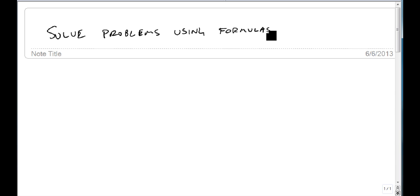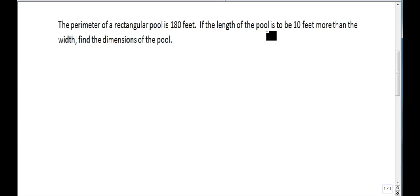So the first example we're going to look at relates to a swimming pool. Suppose we have a perimeter of a swimming pool. We know that the swimming pool has a perimeter of 180 feet. We also know that the length of the pool is 10 feet more than the width. Can we use this information to figure out what the dimensions of the pool are, what the length and the width are?